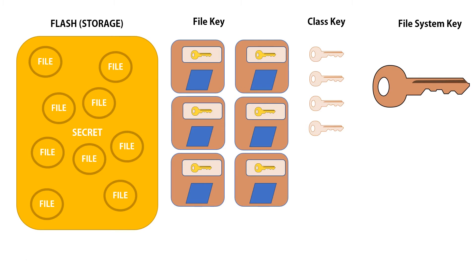The file system key is created when iOS is first installed — it's created at the factory. If your phone gets messed up and you reinstall iOS, then a new file system key is generated.